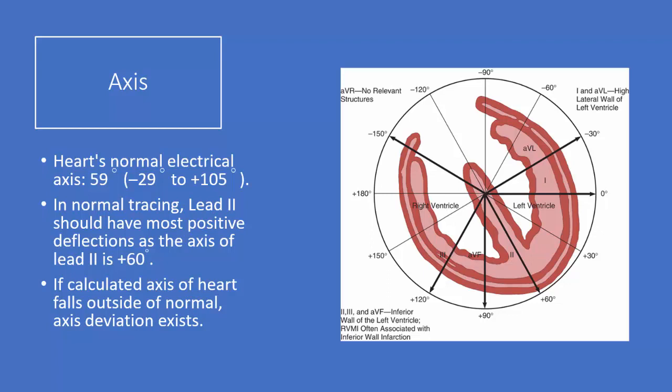If the calculated axis of the heart falls outside of normal, axis deviation exists. Most modern 12 lead ECG machines will electronically calculate axis of various waves. When a machine does not calculate the QRS, you can look at different things. We just really want to know, is it going normally? Is it going rightward? Is it going opposite of normal? Or is it going leftward? In that case, we would look at leads one and AVF.